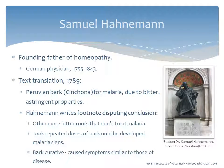Samuel Hahnemann is considered the founding father of homeopathy. He was a German physician who lived from 1755 to 1843. In 1789, while translating a paper by Dr. Cullen, who argued that Peruvian bark (cinchona) treated malaria due to its bitter astringent properties, Hahnemann disagreed. He took repeated doses of the cinchona bark until he developed symptoms matching malaria, concluding that cinchona is curative because it causes symptoms similar to the disease.